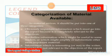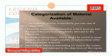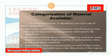Categorization of material available. As material arrives, it should be put into one of three categories. Jab aapke paas material maujood hota hai, to phir aapko kya karna parta hai — isi teen categories mein taqseem kar dete hain. Obviously important information which must go into the report because it is completely relevant to the objectives. Sabse pehle to aapki report mein kya honi chahiye? Important information honi chahiye, jo ke aapki report se relevant hai.